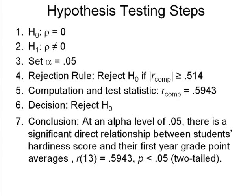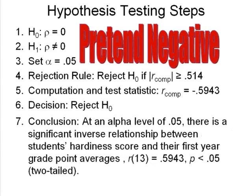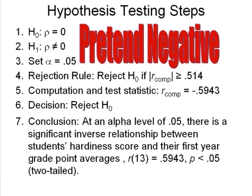Just for the fun of it, let's take a look at what would happen if we had had a negative correlation. We didn't, but let's pretend that instead of having a positive .5943, we would have had a negative .5943. We still would have rejected H0, but our conclusion would be different. We would say at an alpha level of .05, there is a significant inverse relationship between students' hardiness scores and their first-year grade point averages. The difference is in the word inverse versus direct — inverse means that the higher the hardiness score, the lower the GPA is likely to be at the end of the first year.